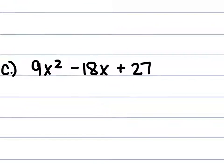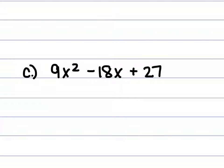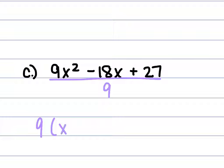For our last example in this set, we factor out 9 as the greatest common factor, which comes out front, leaving x squared minus 2x plus 3 inside the parentheses.